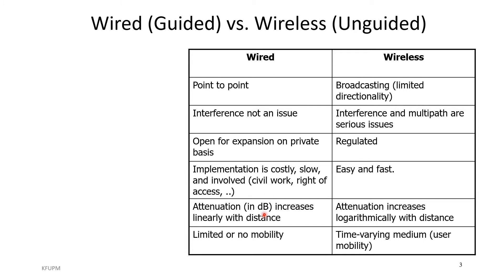Attenuation in wired systems in dB increases linearly with distance — if you double the distance, the signal loss doubles. However, in wireless it's exponential on a logarithmic scale, meaning it's not linear with distance. For example, if you double the distance, you get only a quarter of the power in free space.